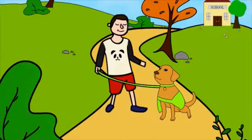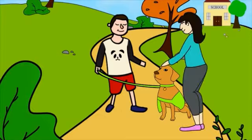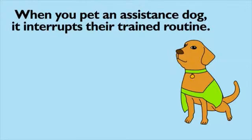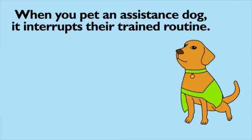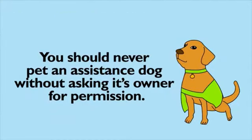The final student we will see is a visually impaired boy with a guide dog. He is tired after a long day at school and is walking home. A woman sees the dog and decides to go and pet it — the boy does not know the woman or that she is petting the dog. When you pet an assistance dog it interrupts their trained routine. When an assistance dog is wearing the vest, they are working. You should never pet an assistance dog without asking its owner for permission.